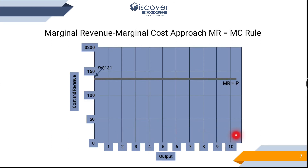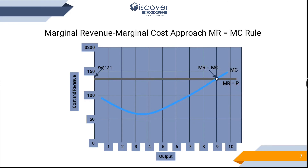On one axis we have quantities and on the other prices. The price is 131, and you know that P = AR = MR — so this line plays three roles: it is the price line, the average revenue line, and the marginal revenue line. The marginal cost curve first falls to a minimum and then rises up. The point where MC = MR is the break-even point.